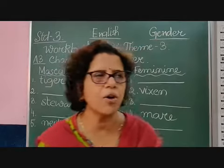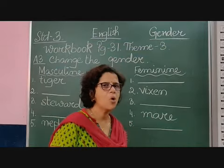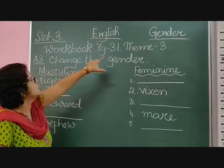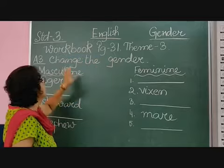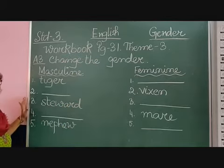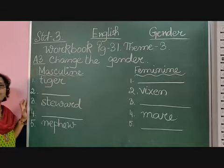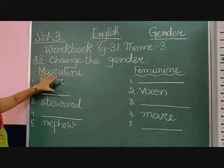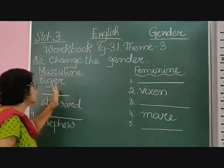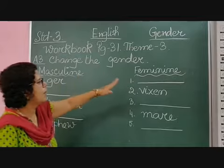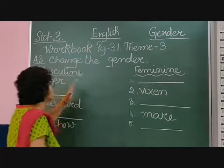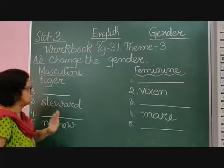These we will discuss later on. Now let us do the exercise which is given in your workbook — workbook page number 31, theme 3. We are going to change the gender. Five nouns are given and you have to write the opposite gender. Either it is given in masculine gender or in feminine gender, and you have to change it: if it is given in masculine, change it into feminine; if it is given in feminine, change it into masculine.